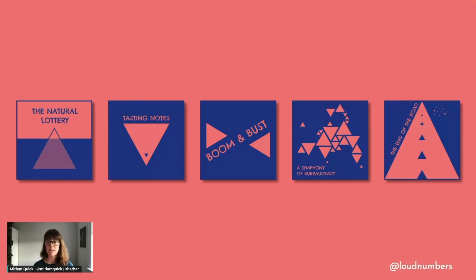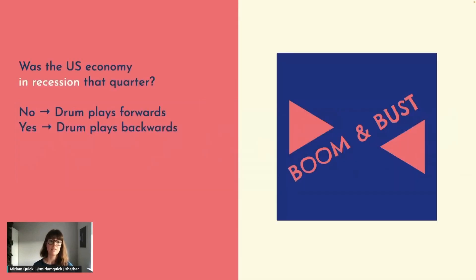We have episodes on everything from insect decline to the taste of beer, all based on data. In the third episode, Boom and Bust, we use data on the US economy since 1968 to dictate the drum pattern in a jungle track. When the economy grew, the drums play forwards like normal, but when it was in recession we reversed the sample so it plays backwards. Listen out for another sample saying cool down the dance hall when the economy starts to cool down, and be warned this one starts a little bit loud.